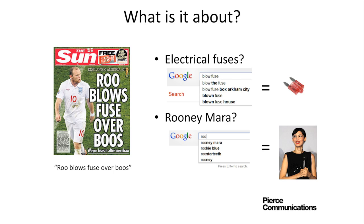When a search engine looks at that headline, it doesn't really understand what it means. Whereas for someone who picks up the paper and sees that next to a big photo of Wayne Rooney, it's perfectly clear what the topic of that headline is. But for a search engine, there are a couple of words in there that don't really mean much when taken together as a headline.